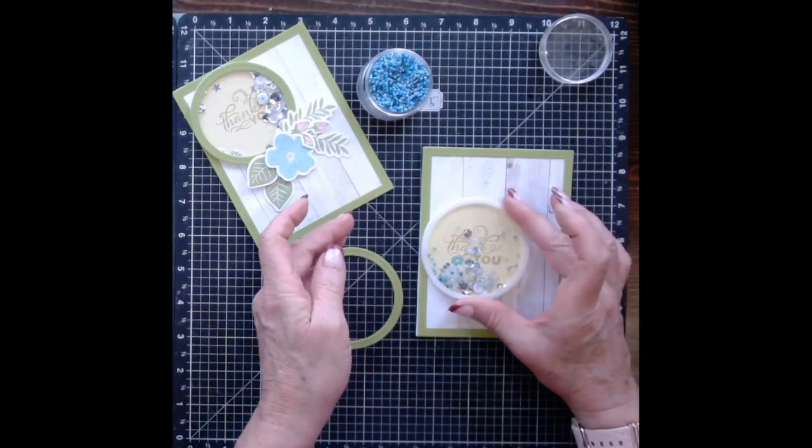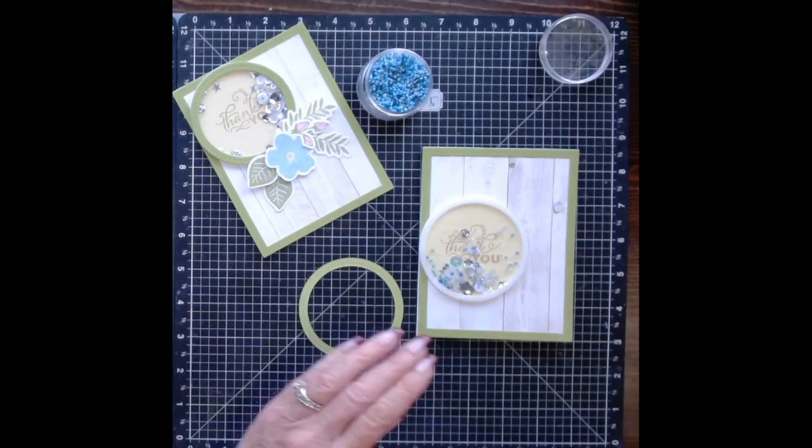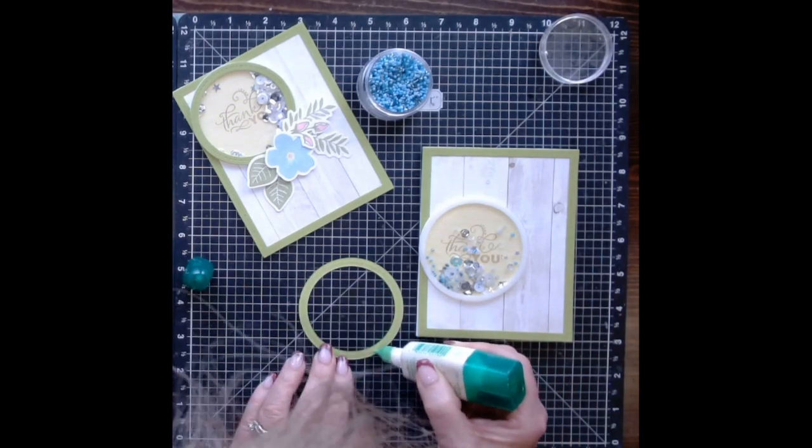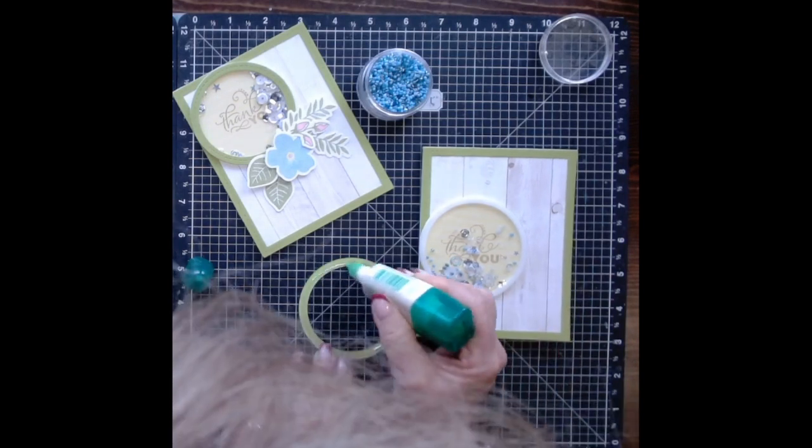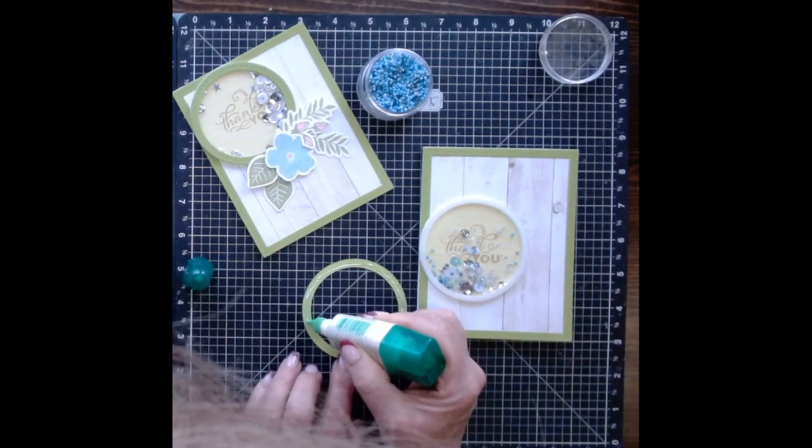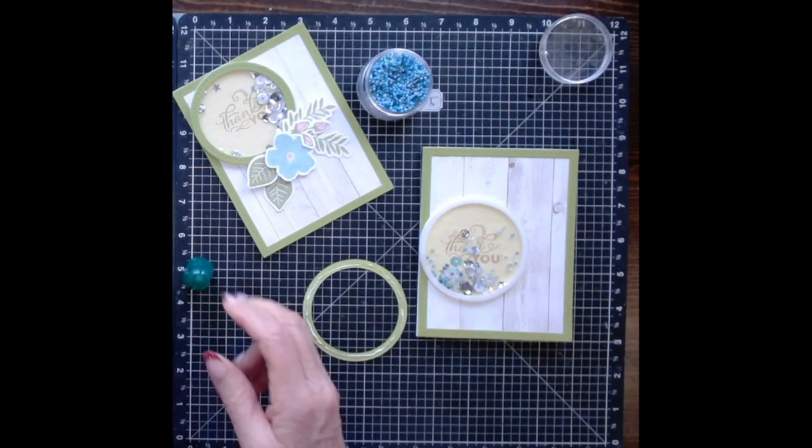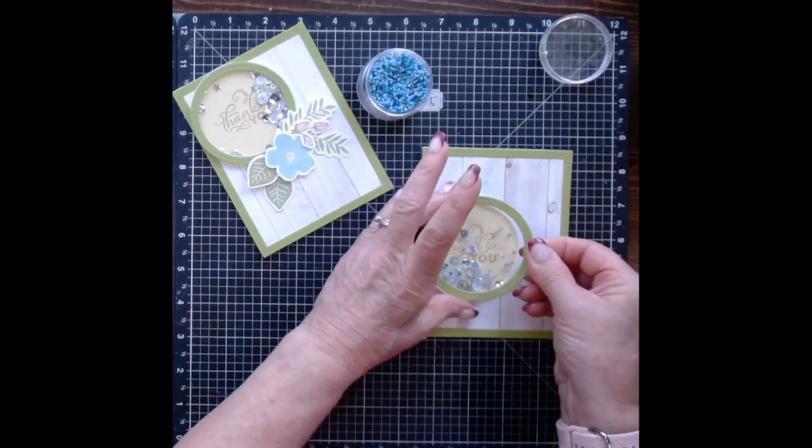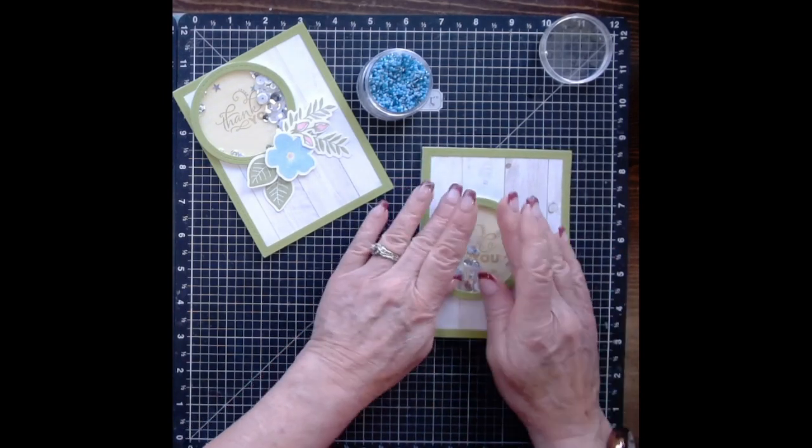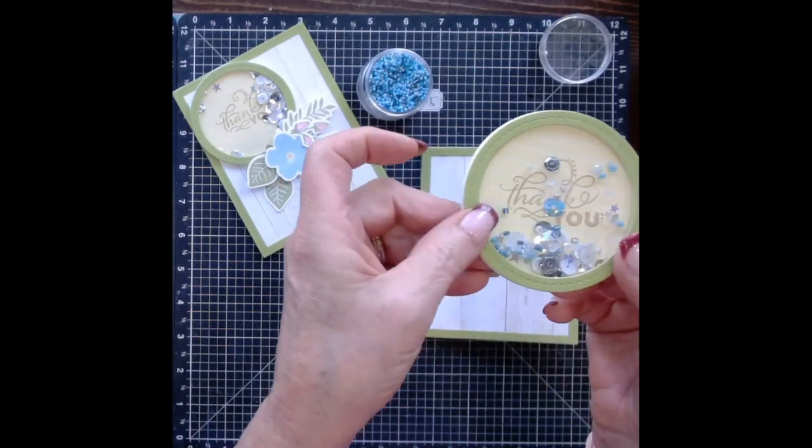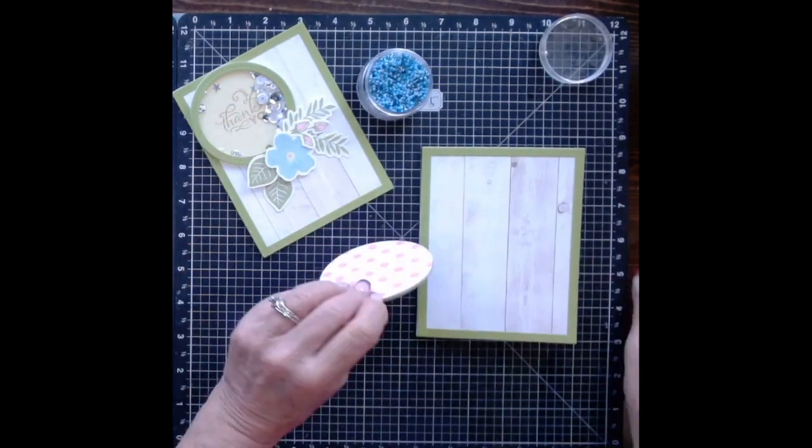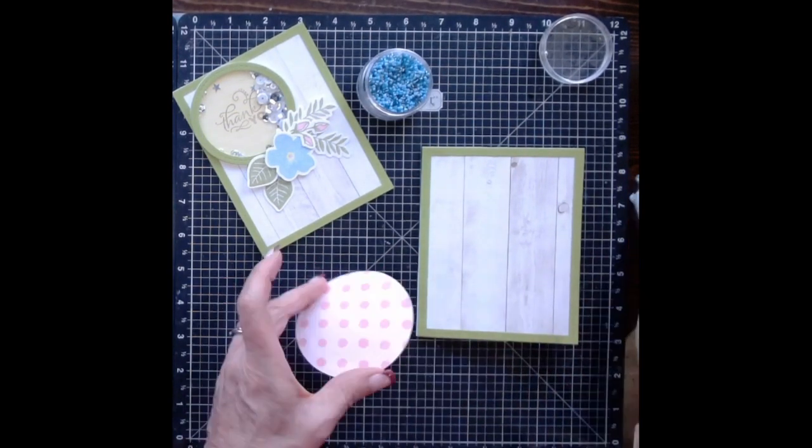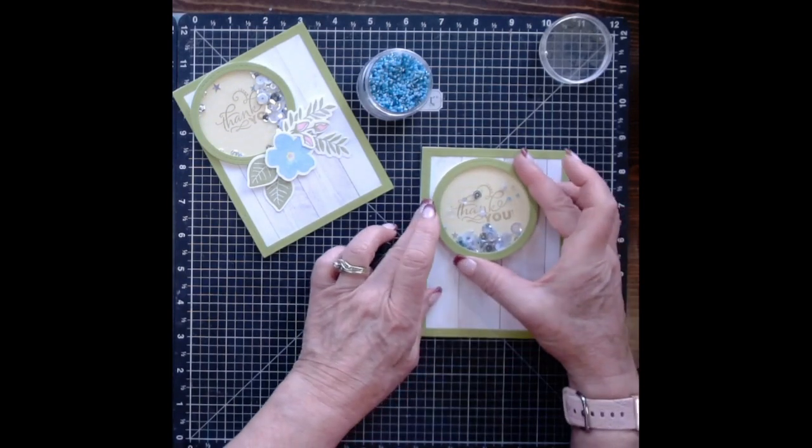Now I can go ahead and put the liquid glue on the back of that thin cut frame that I cut from the circle thin cuts. Please excuse my head I didn't realize I had leaned so far over. The liquid glue works really well in this case because you can get it just where you want it and it does leave some time for you to adjust placement should you need to. So I'm just making sure it's thoroughly on there and you can see those beads and sequins in there. Now I'm going to go ahead and put some adhesive on the back side so I can adhere it to the base of my card. And I'm going to do this one just a little bit different placement than I did in my sample.